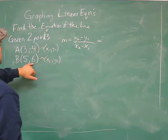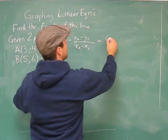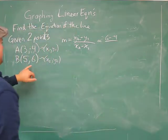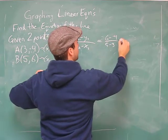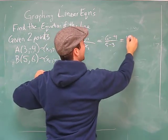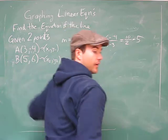y2 minus y1, so 6 minus negative 4. And x2 minus x1, so 5 minus 3. That equals 10 over 2, which equals 5.